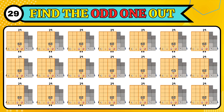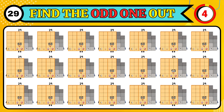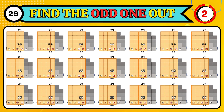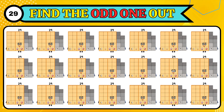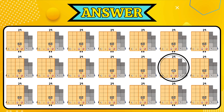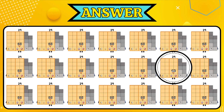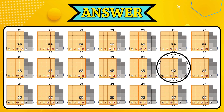Can you find the odd 29? Yes! The odd 29 is in the second row, sixth column.